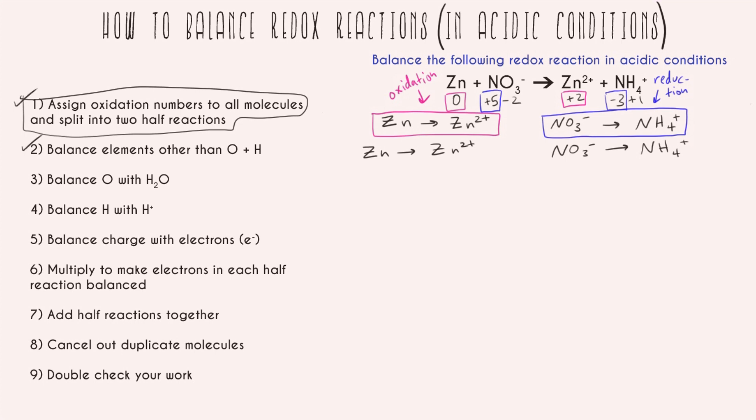Now I'm going to go ahead and balance the oxygen with H2O. So once again our zinc oxidation stays the same because there's no oxygen in it. But we are going to have to do balancing with our reduction with our nitrate to ammonium. In this case we can see that the left hand side, the nitrate has three oxygens and the right hand side doesn't have any oxygens. So I'm going to have to go ahead and add a water on the right hand side and I need there to be three waters so I'm going to balance this with a three right here. All right, now step three is done.